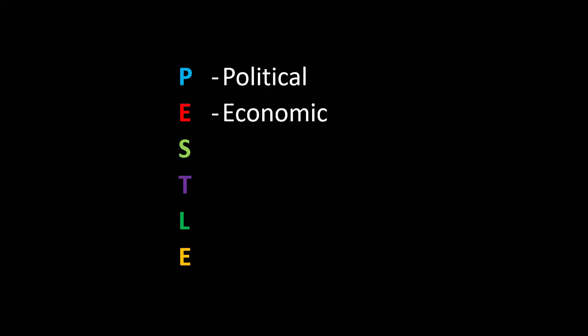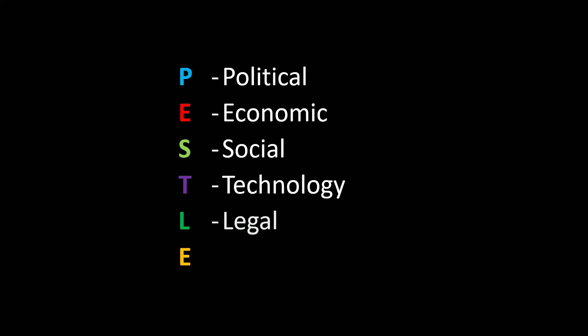PESTLE is a widely used business tool for just this purpose. It's not limited to project management and you may have encountered it before. Each of the letters in PESTLE represents an area of environment or influence that we should explore. P stands for political, the first E is for economic, we then have social, technology, legal, and finally environmental. We will take a closer look at each of them in turn.